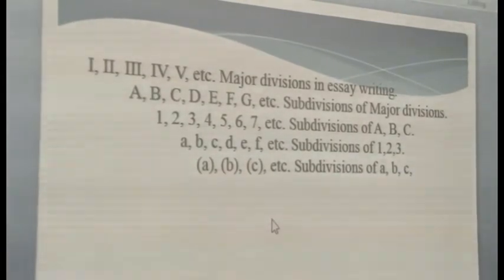This is one type of an outline. It has the notation of Roman figures here. You can see that we have the Roman figures 1, 2, 3, 4, 5 that will be used for major divisions in any essay writing.